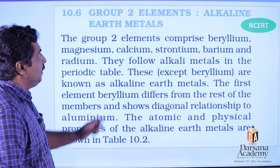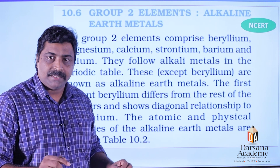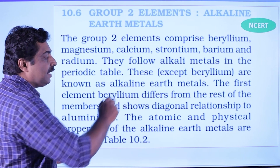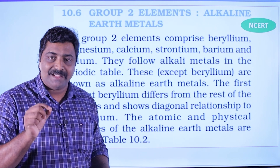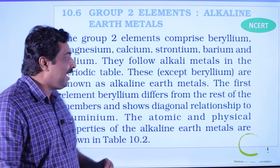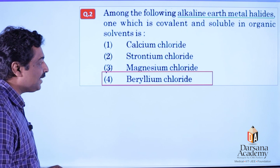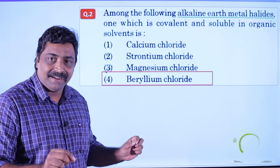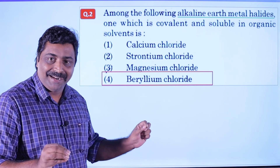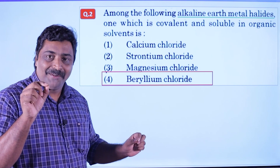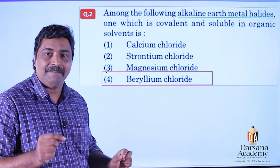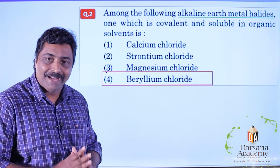From the NCERT book, considering alkaline earth metals followed by alkali metals in the periodic table, except beryllium, other alkaline earth metal halides like calcium chloride and magnesium chloride are ionic. Beryllium chloride is covalent and soluble in organic solvents, so beryllium chloride cannot be considered as the answer in this context.